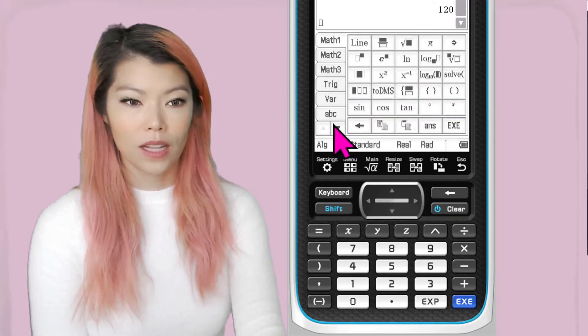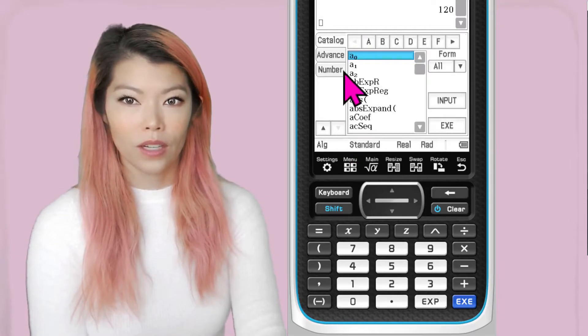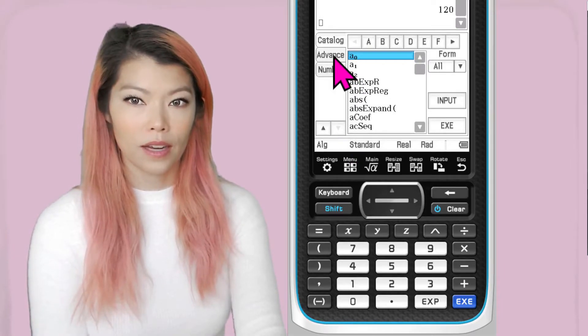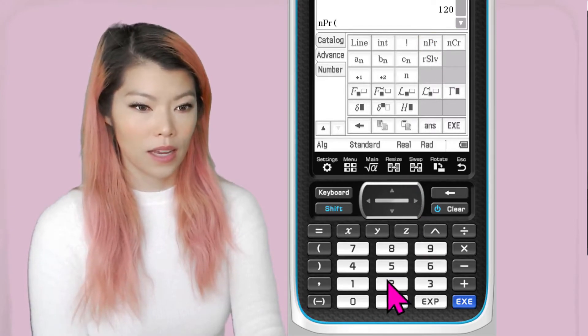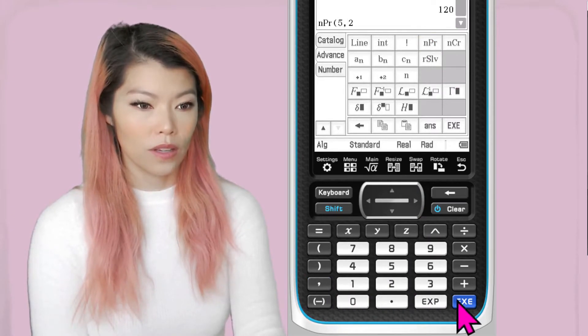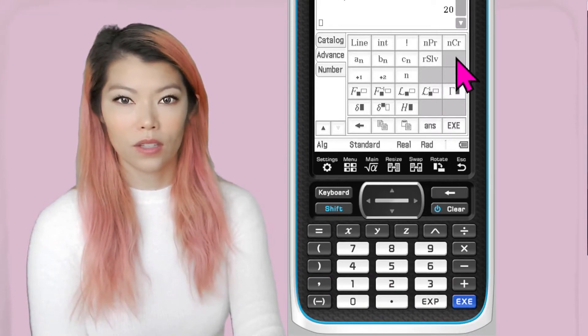And Keyboard, let's go back. If you click on this down arrow, you can go to Advance and here we have NPR, so let's say 5 comma 2, that gives us 20.